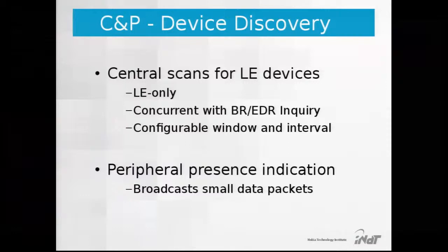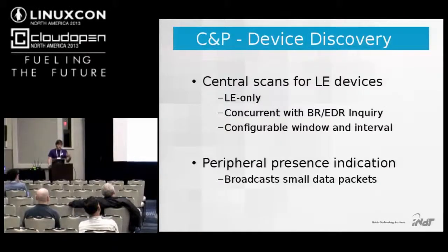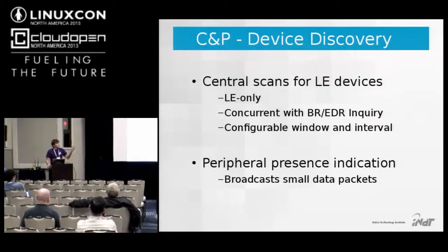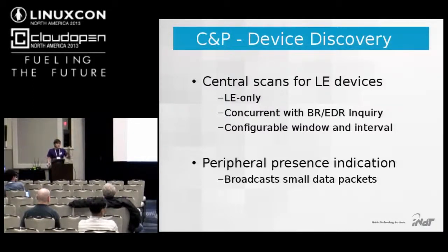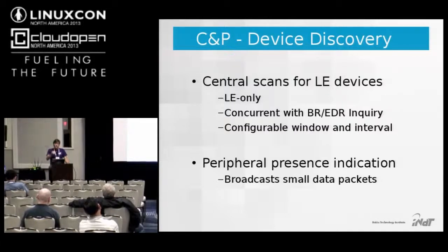The central role scans to find LE devices nearby. This scan can only find LE devices and is concurrent with BR/EDR inquiry, which is classic Bluetooth device discovery. Scanning has configurable parameters: the interval between two scanning window starts and the scanning window duration. For example, with a 5-second interval and a 2-second window, the hardware scans for 2 seconds, is off for 3 seconds, then starts another window. For continuous scanning, set the window equal to the interval.